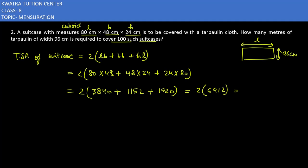This is equal to 13,824 cm². This is our total surface area of one suitcase.